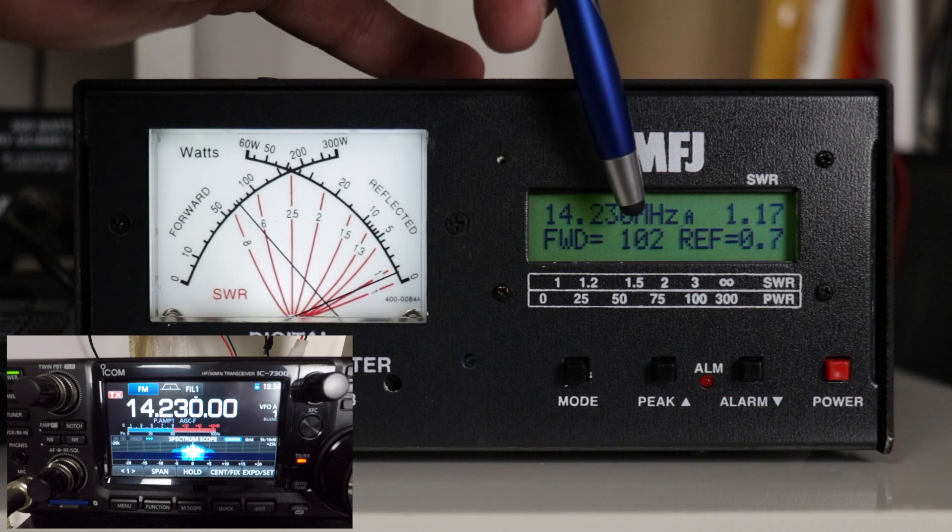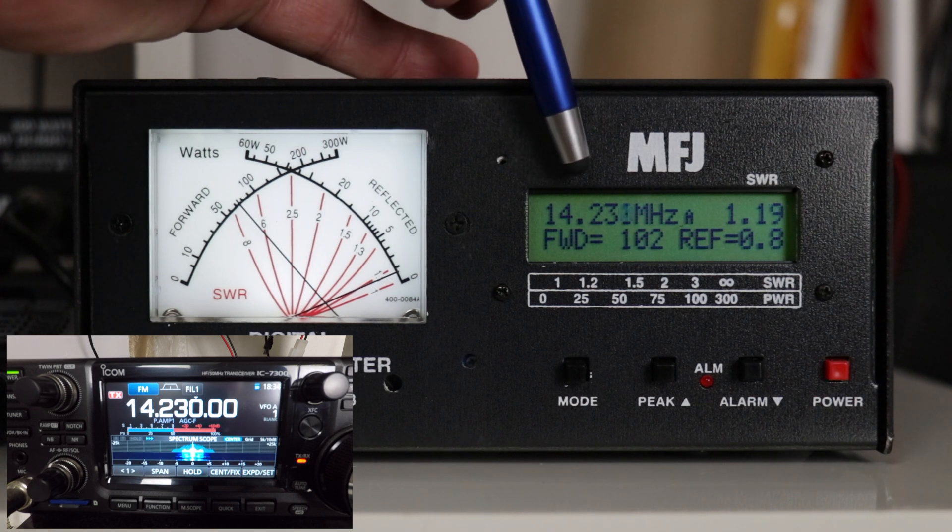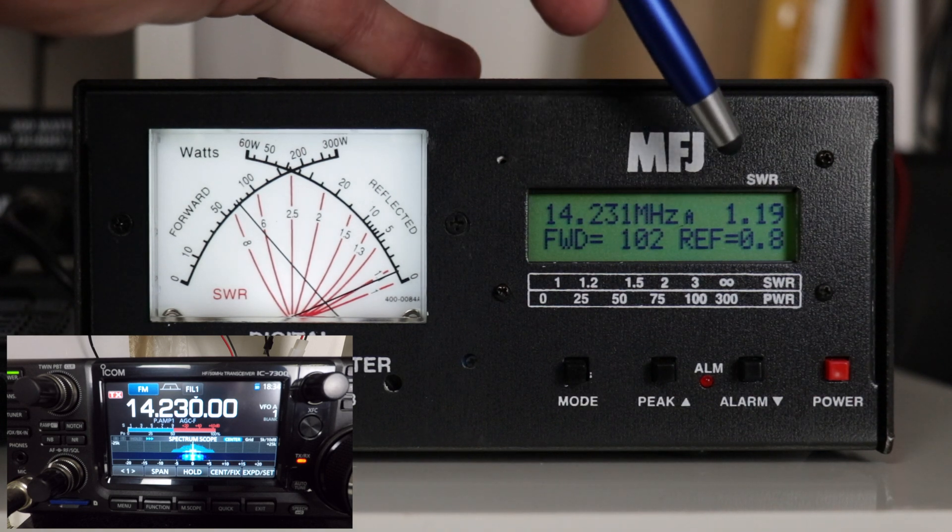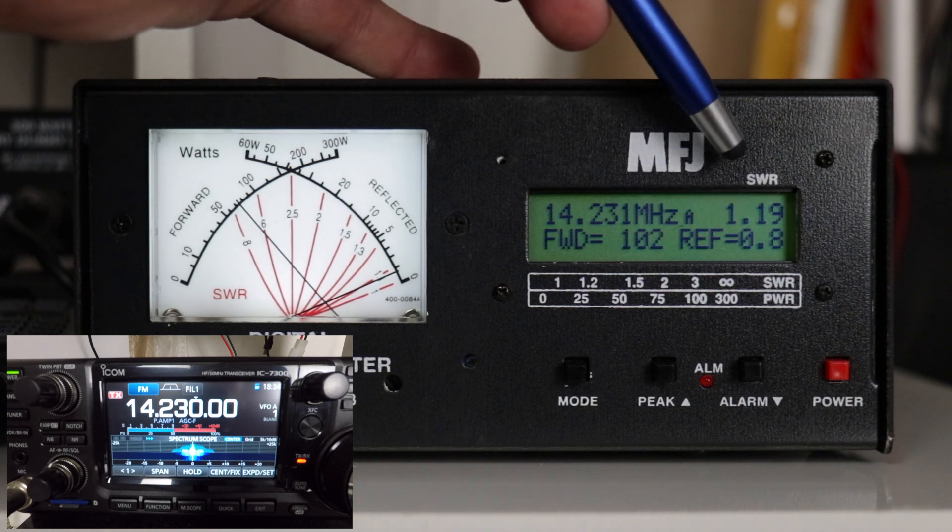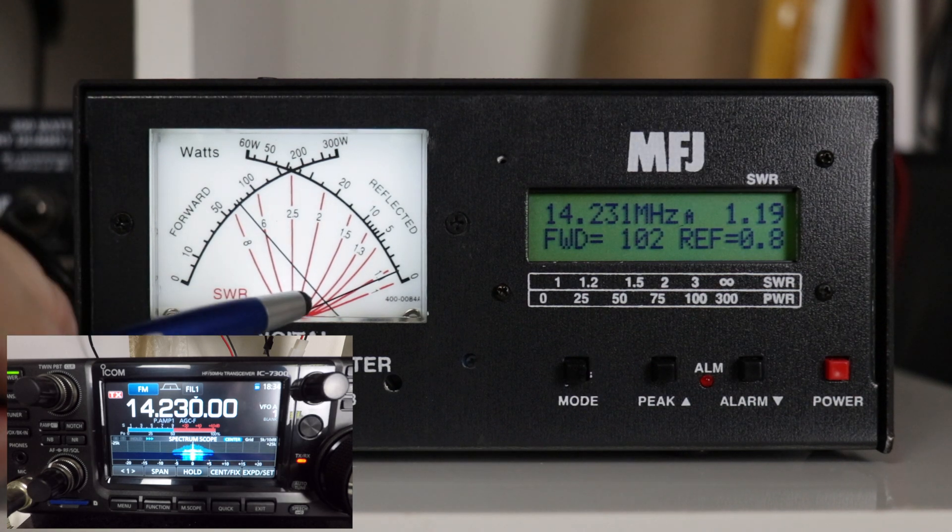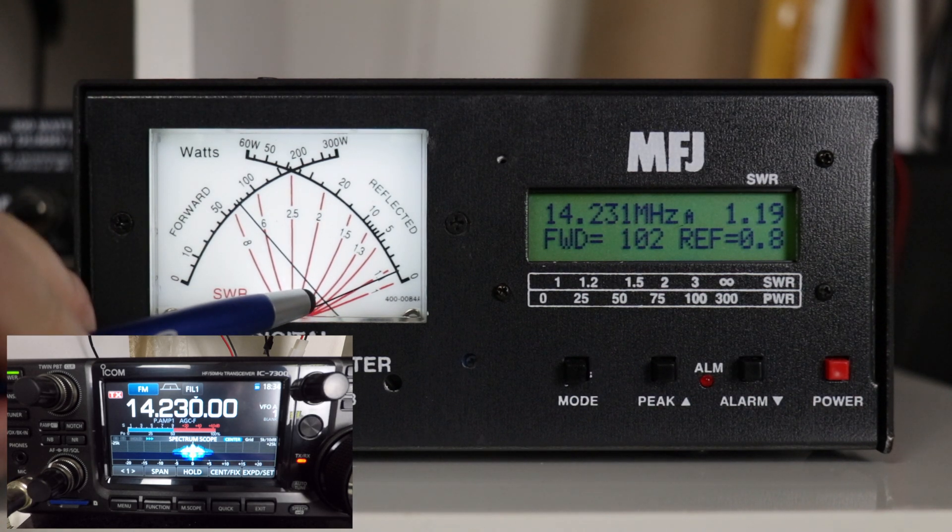I've got forward of 103. The frequency is set to 14.230. The reflected is 0.8 and my SWR is 1.19, right about where the needles are meeting.